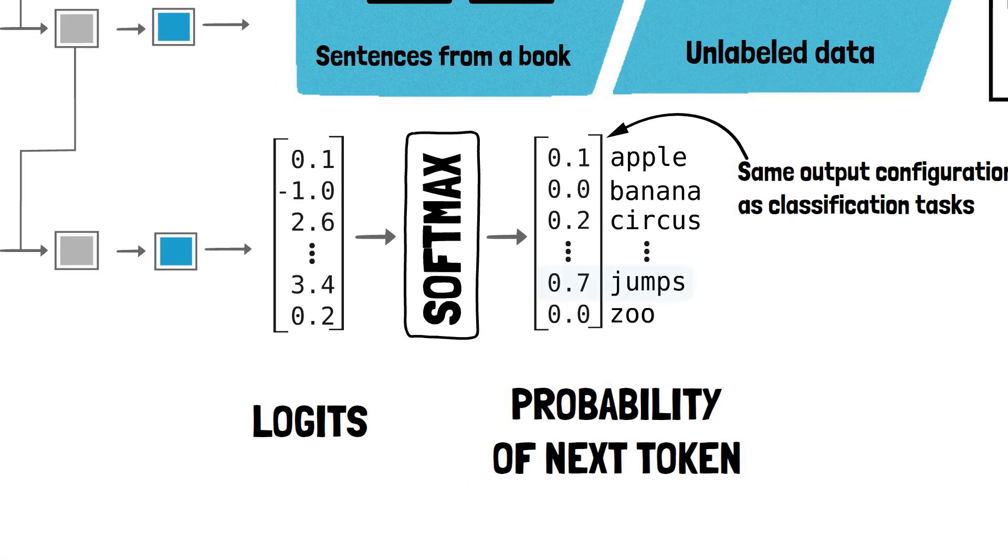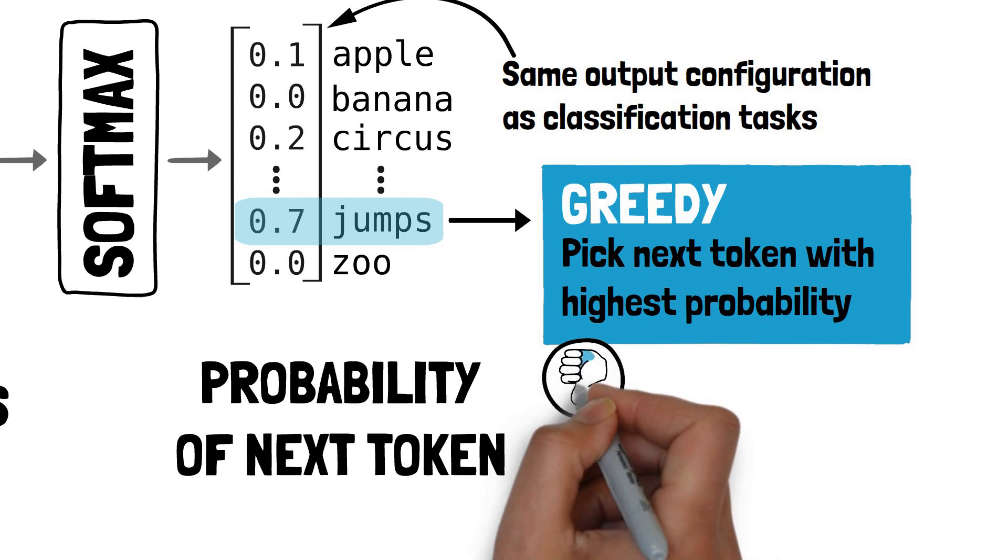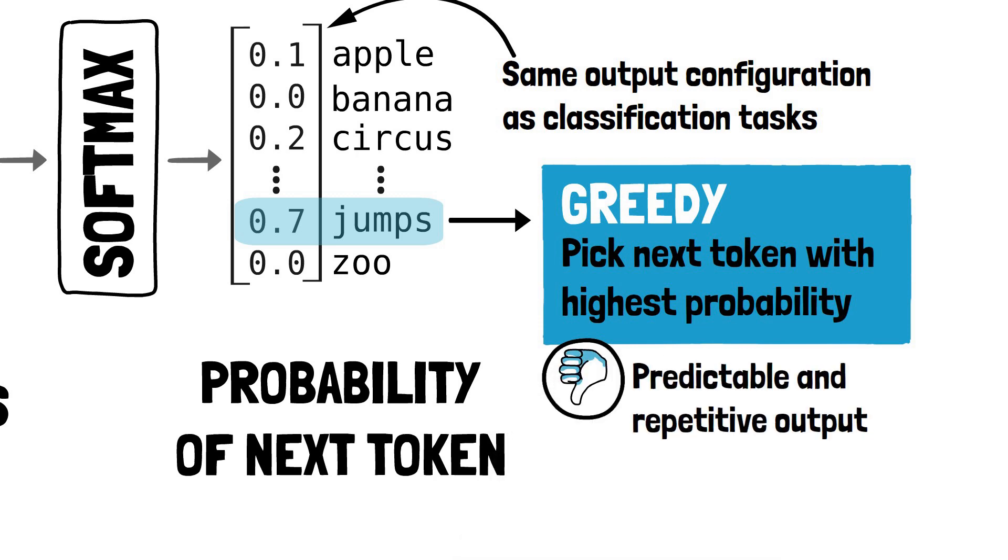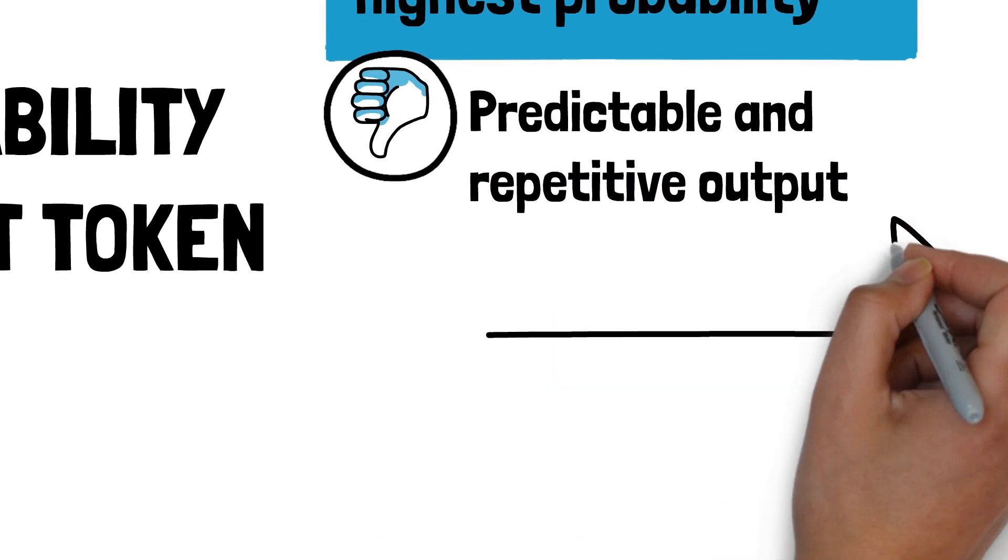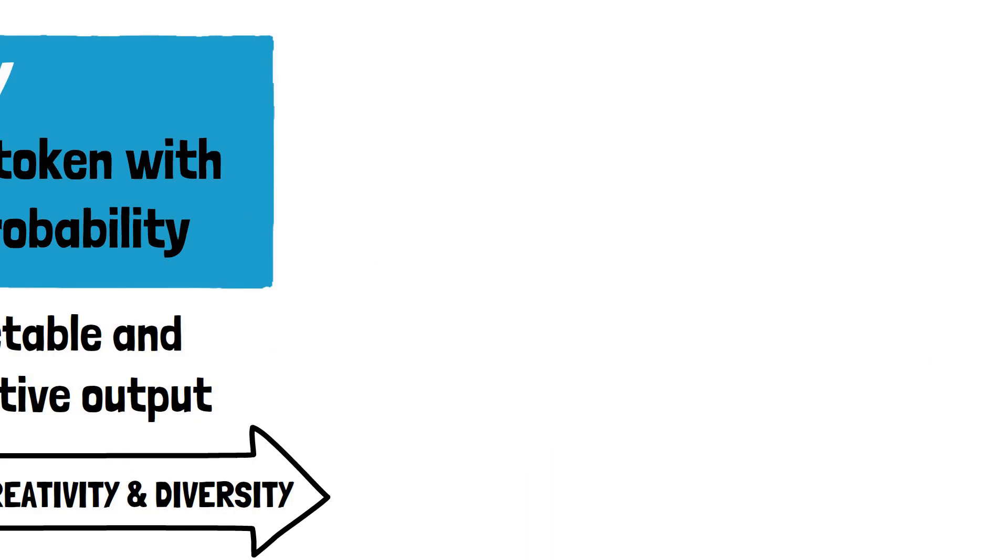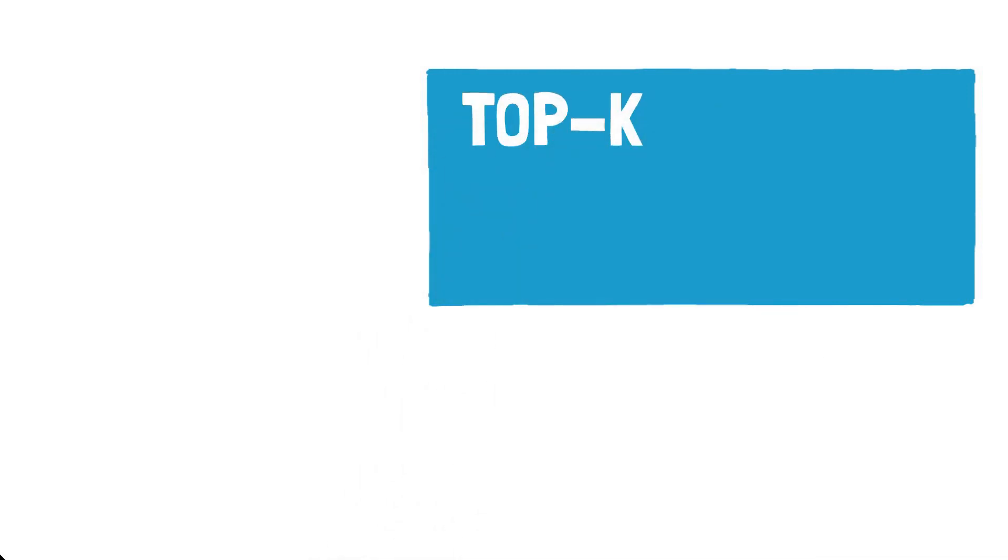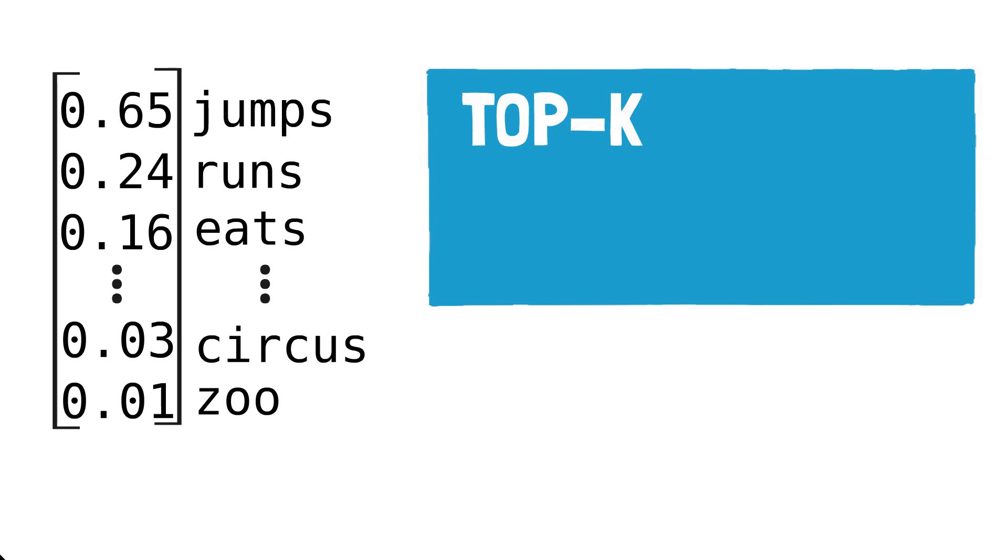Now you might think that we always pick the word with the highest probability as the next word. This is called greedy approach, but if we did that our outputs would become very predictable and often repetitive. Instead, we want our model to be creative and generate diverse outputs. One way to add diversity is to use top-K sampling. Here, instead of always choosing the top prediction, the model considers the top K predictions and chooses randomly from among them.